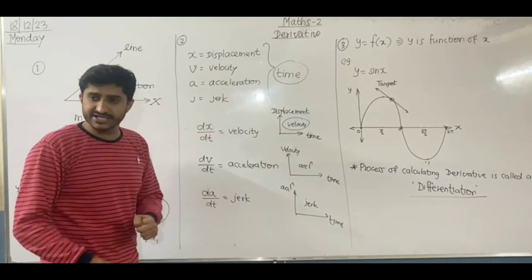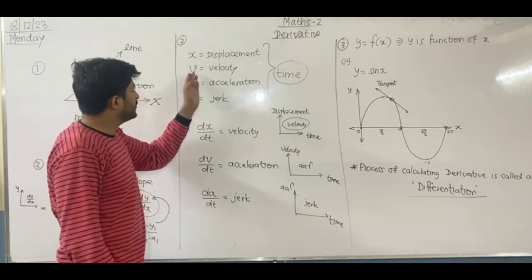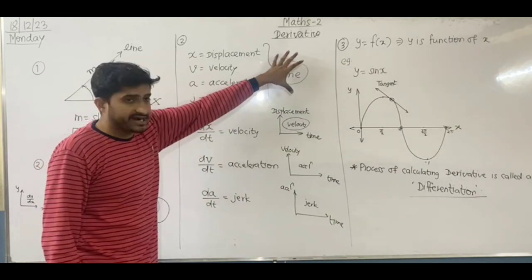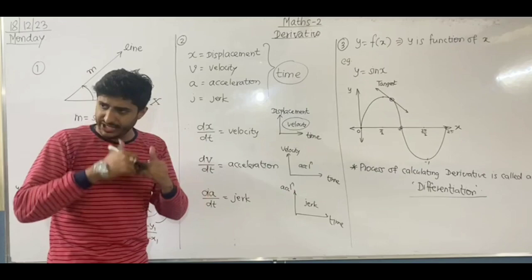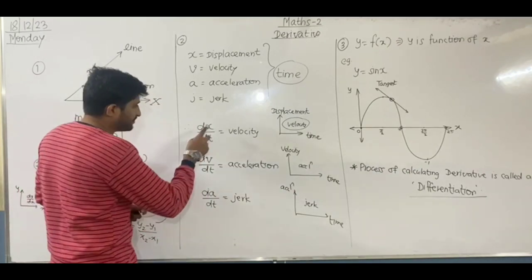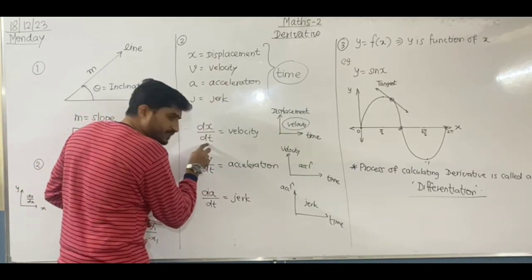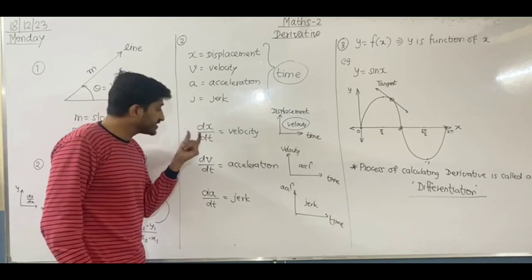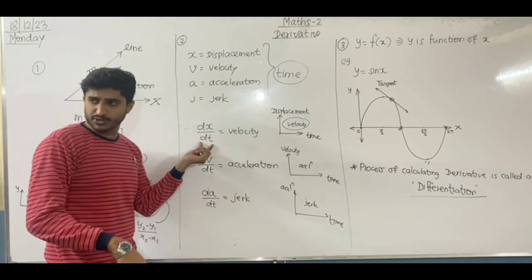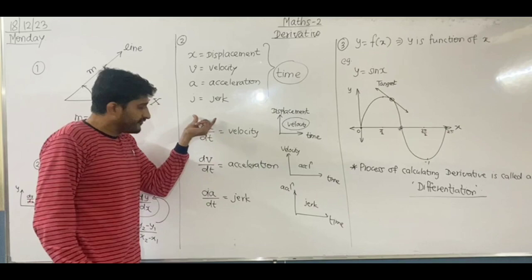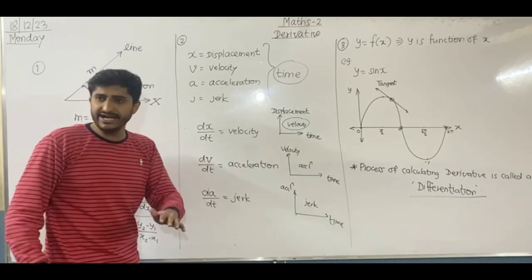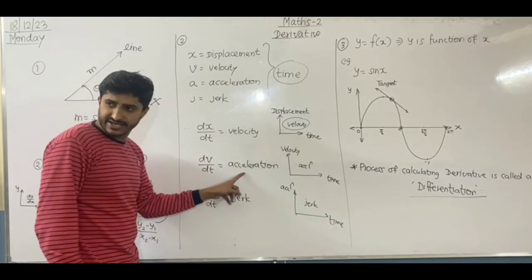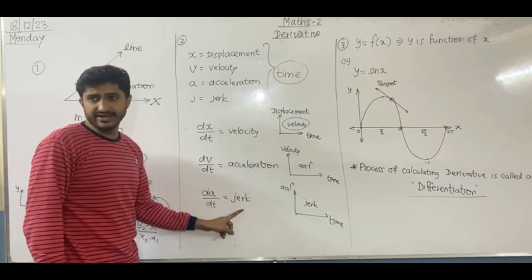If we discuss physics, x indicates displacement, v indicates velocity, a indicates acceleration, and j indicates jerk. Rate of change of velocity is acceleration. Rate of change of acceleration is jerk.